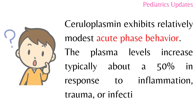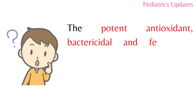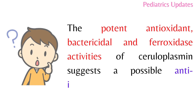Ceruloplasmin exhibits relatively modest acute phase behavior. The plasma levels increase typically about 50 percent in response to inflammation, trauma, or infection. The potent antioxidant, bactericidal, and ferroxidase activities of ceruloplasmin suggest a possible anti-inflammatory function.